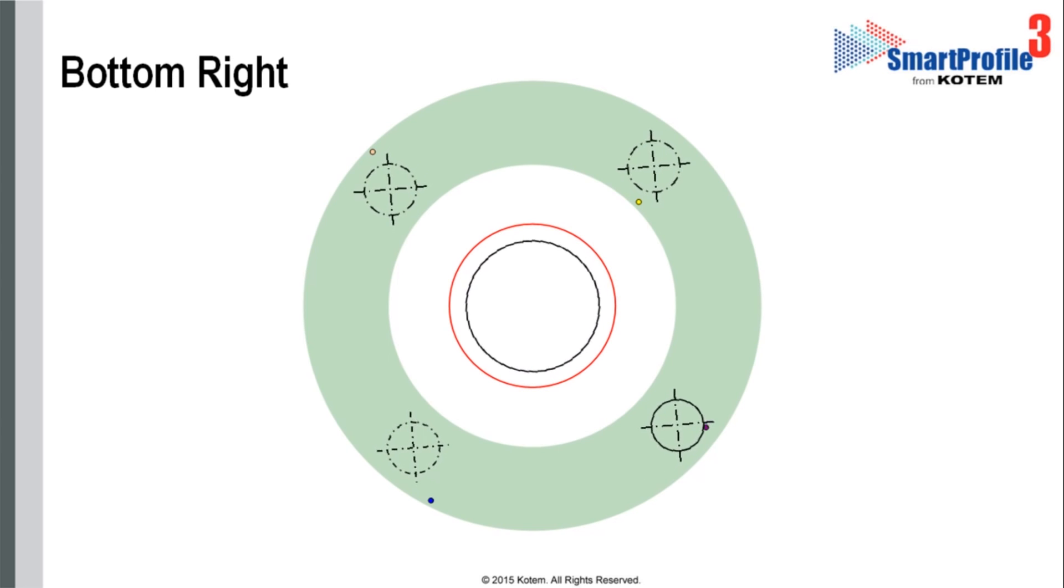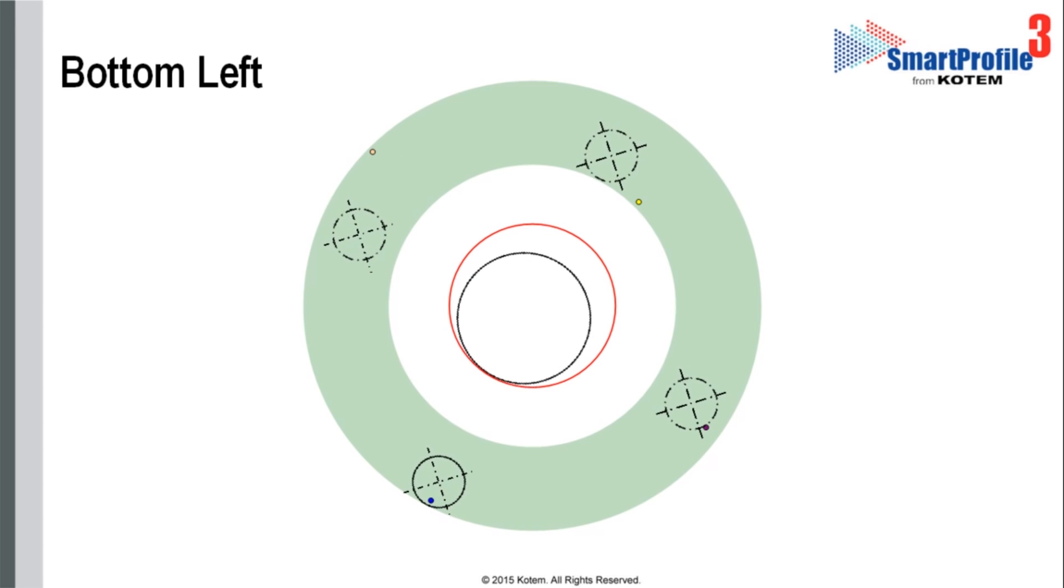To take care of the bottom right point, we could rotate the gauge and then translate it in X and Y. This would bring the point as close to nominal as possible. Similarly, the last axis point could be brought as close to nominal as possible by a rotation and a translation.